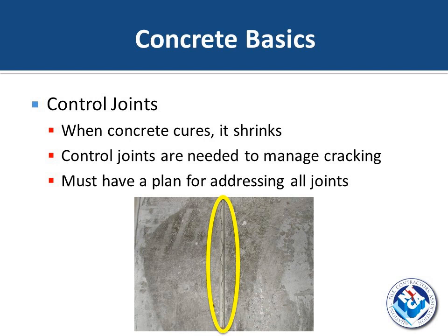As concrete cures, it shrinks, so control joints are needed to manage cracking. A typical way to do this is to cut the slab with a saw at predetermined spacing. This saw cut joint provides pathways for the concrete to crack in a controlled way. Pictured here is a slab that was saw cut, and in the yellow oval you can see it cracked right down the middle on that saw cut joint, which is exactly what we wanted.